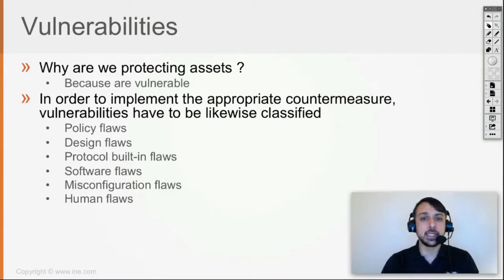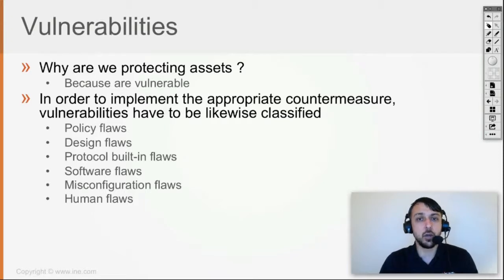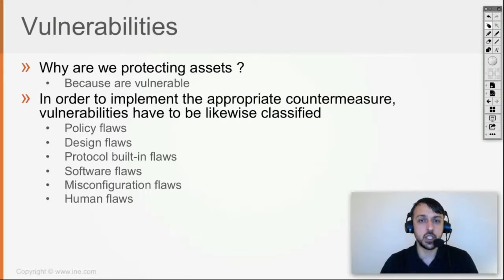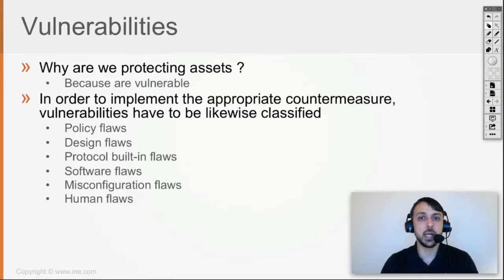For assets classified as public or unclassified, there's no need to even identify if those are vulnerable or not. Because since they're publicly available, you don't even care if that information leaks out. For that information, you only care that it is available. So for assets which are publicly available to the whole internet, like a description of the organization's role and scope, you only care that information is reachable and available at all times.